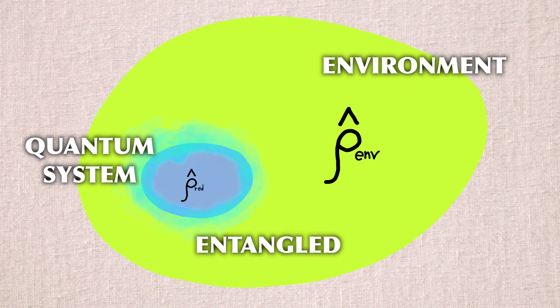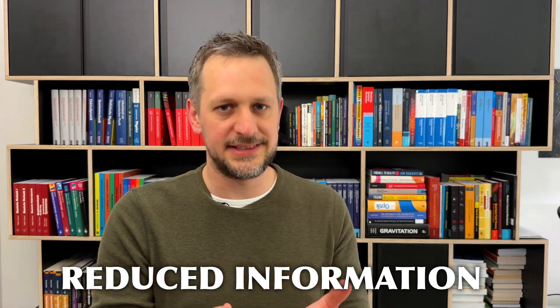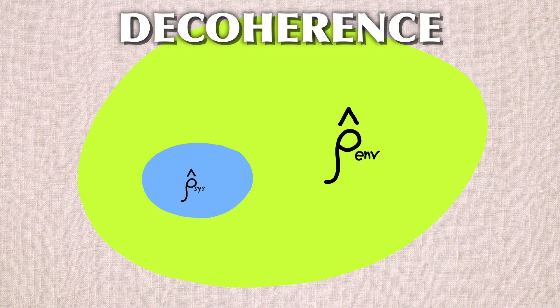Information is transferred from the quantum system to the environment, or more precisely, into the correlations between the quantum system and the environment. In any kind of realistic setting, these correlations cannot be measured. That would be like trying to catch all the air molecules that you breathed out 10 minutes ago. So we only ever have access to reduced information of a quantum state, which is what we call a mixed state. And this is decoherence.